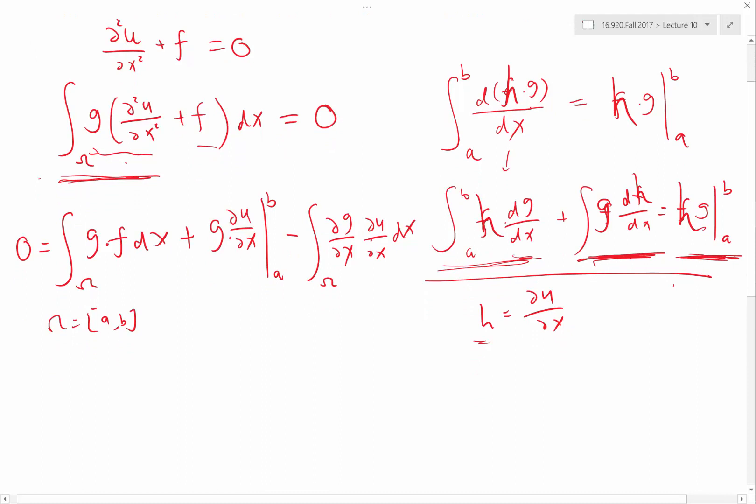So what we have done here, is that we removed one level of differentiability from the solution u. Because after this integration by parts, the second derivative of u no longer appears, right? But the assumption is that the test function g, which we multiply on top of this differential equation, has to be at least differentiable once.